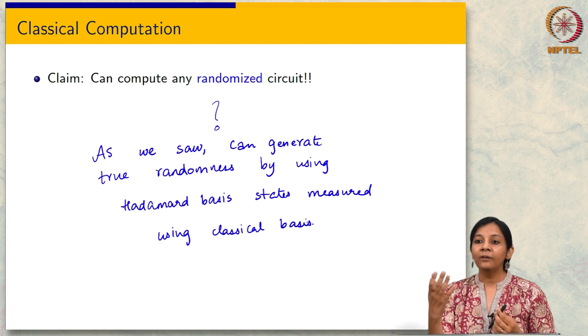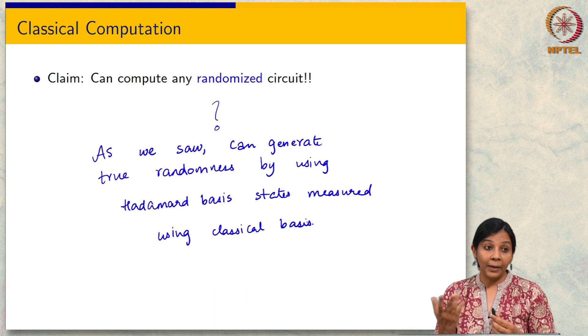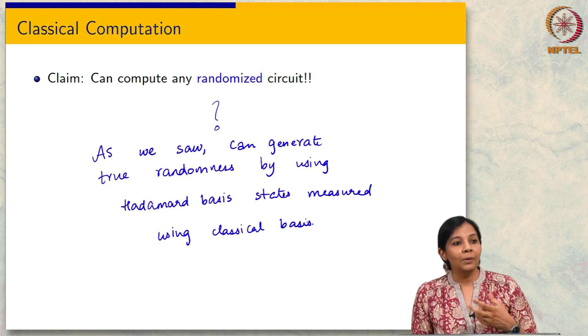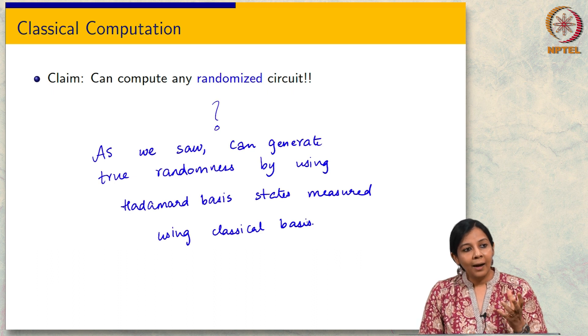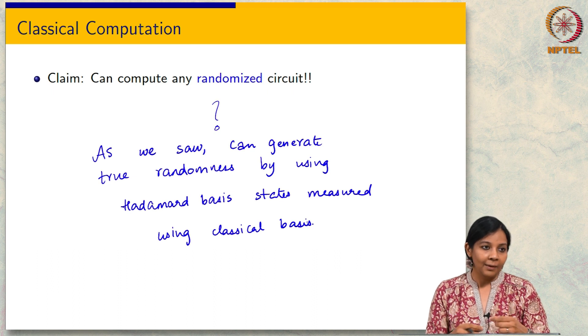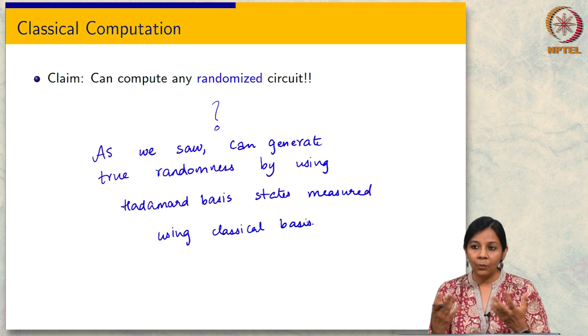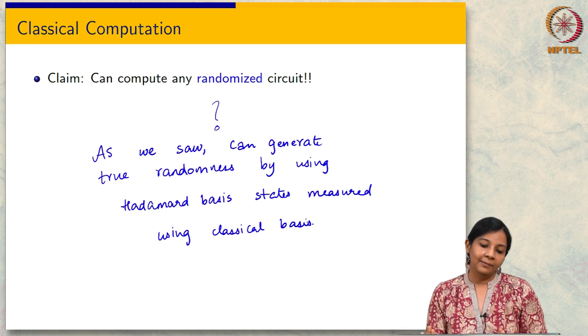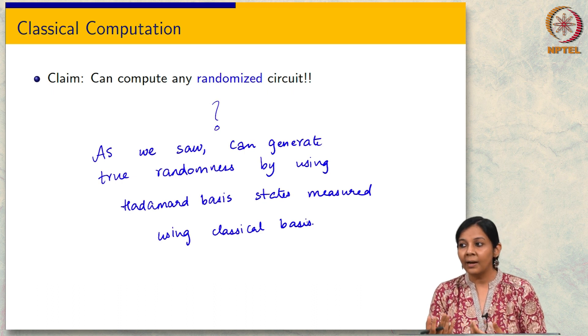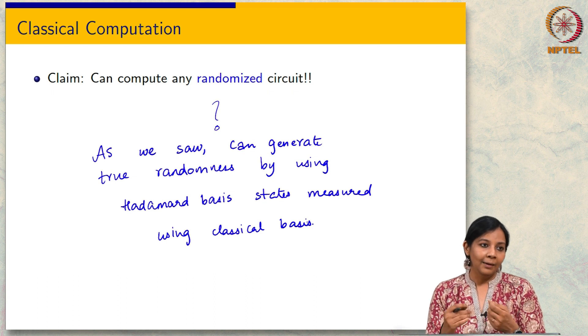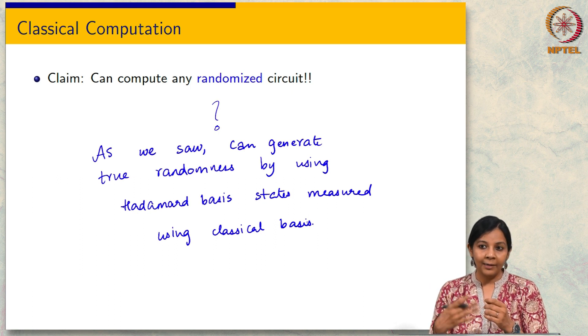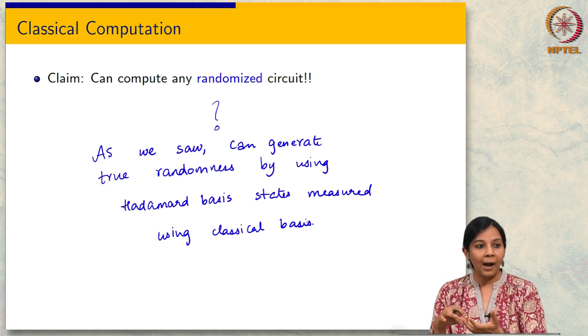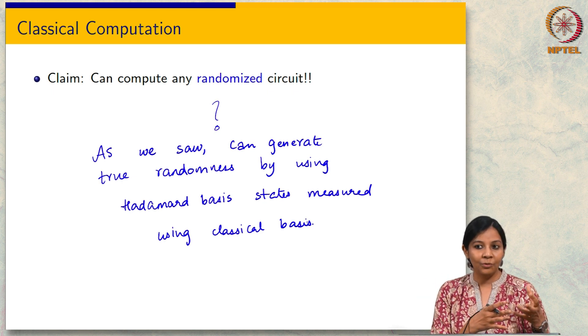The error can be driven down to be so small that it is an unphysical quantity this probability of error. So, in our universe it will never happen. And this will give you the benefits of a much faster algorithm; typically that is how we use it, but it is not that they do more. That is why I was a little bit hesitant to concede that already quantum is doing really better. In terms of feasibility we do not know that randomized does better than deterministic.